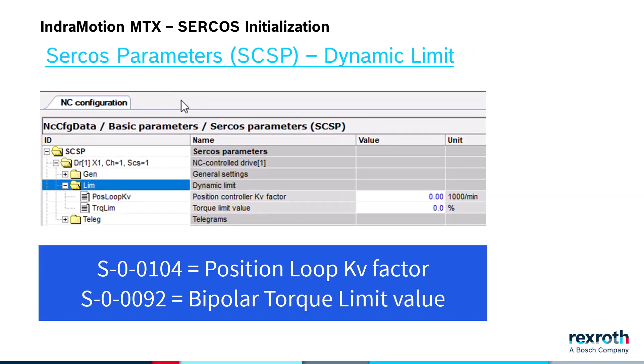With the parameters for dynamic limits, you have the ability to initialize the values for the KV factor and the bipolar torque limit drive parameters during startup. Since it is possible for the control to change these drive parameters during operation, these machine parameters guarantee that the drive will start with a known good value.